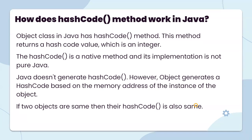The Object class in Java has a hashCode method. This method returns a hashCode value, which is an integer. The hashCode is a native method, and its implementation is not pure Java. Objects generate a hashCode based on the memory address of the instance of the object. If two objects are the same, then their hashCode is also the same.